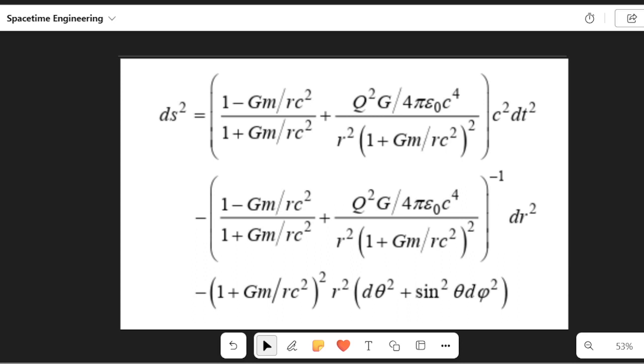And so, I'm gonna briefly go over all of the terms, because I think that's pretty important. So, ds squared would be spacetime interval. G is Newton's gravitational constant. M is the mass of the object. Q is the charge of the object. R is the radial coordinate. C is the speed of light in a vacuum. Remember, in a vacuum. And then, epsilon naught is the vacuum permittivity.